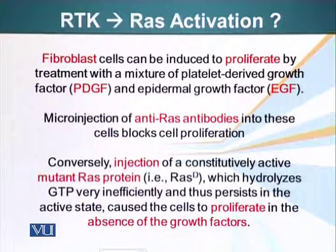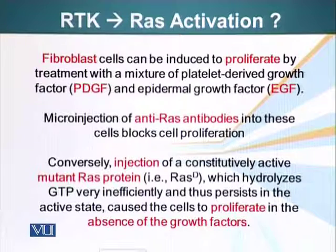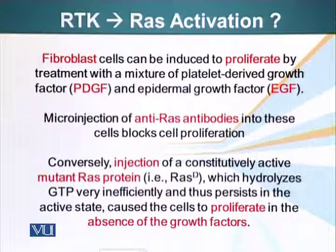Conversely, if we inject a special type of RAS into cells that is constitutively active — meaning that this RAS has a mutation and it cannot get rid of its GTP, so it's always in the ON state — if such a RAS is injected into the fibroblasts and we don't give the growth factors to these fibroblasts, these fibroblast cells will still proliferate. They will keep on dividing just as if the growth factors were there, however the growth factors are not there.